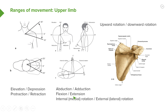We have flexion and extension. Flexion of the upper limb is where we can see the upper limb moving in this direction, and then we can have extension where the upper limb moves backwards in this direction. So flexion of the upper limb at the elbow joint, and then extension of the upper limb at the elbow joint.